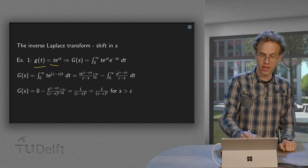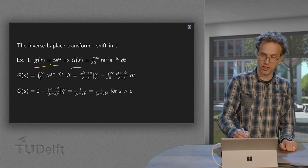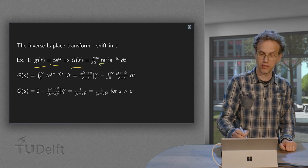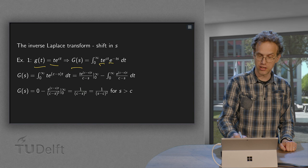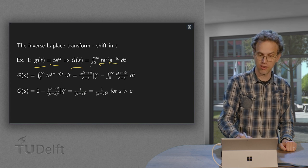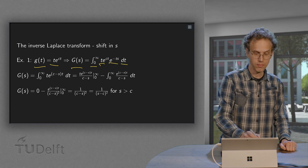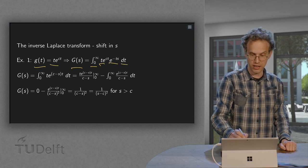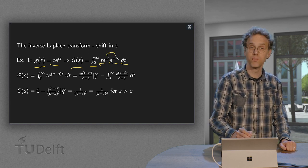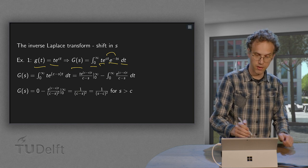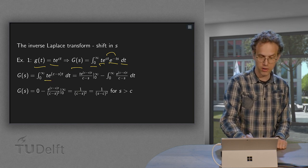So what do we need to do? G(s) - we need to integrate our g(t), multiply by e^(-ts), and integrate from 0 to infinity over t. We rewrite a bit, bringing those two together in one exponential.